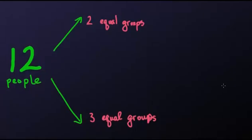In how many ways can twelve people be divided into two equal groups? Step one is to realize that this is a combination problem, so we're going to use combinations. Step two would be to understand what the word 'equal' means — this just tells us that there are six people in each group.